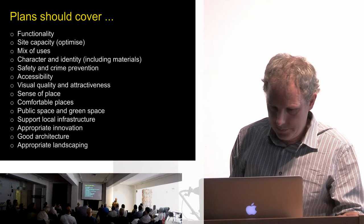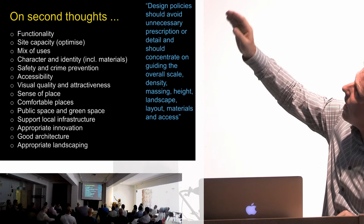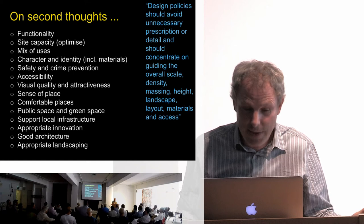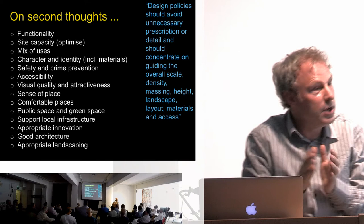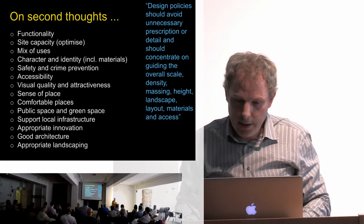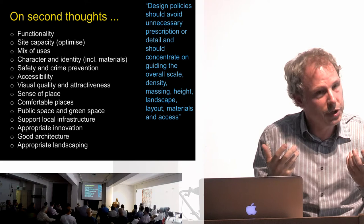It's quite a range of issues which are listed in various ways. Counter-intuitively, it then attempts to limit this list by stating that design policies should avoid unnecessary prescription or detail, and should concentrate on guiding the overall scale, density, massing, height, landscape, layout, materials and access of development. So it lists a whole series of design issues, and then says to concentrate on this much more limited range of purely physical elements. This second list of eight physical factors not only contradicts the earlier statement in policy but seems to limit the agenda much more to a physical one, forgetting some of the more social, environmental and perceptual issues which are in the longer guidance.